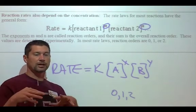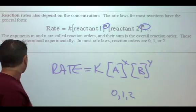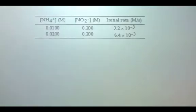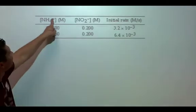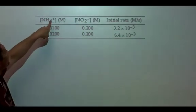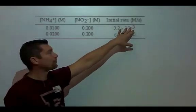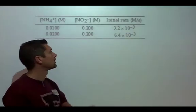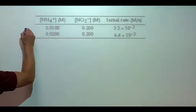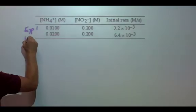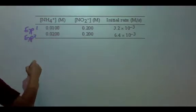You can only get these orders if you look at it experimentally. So here's some fake data. I've got two reactants here, ammonium and nitrite, and then this is my rate. Notice that my rate is measured in molarity per second. This is experiment number one, experiment number two.